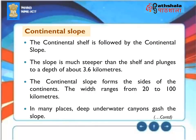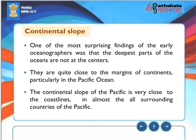Continental Slope: The continental shelf is followed by the continental slope, which is much steeper and plunges to a depth of about 3.6 kilometers, forming the sides of the continents. Its width ranges from 20 to 100 kilometers. In many places, deep underwater canyons gash the slope. One of the most surprising findings of early oceanographers was that the deepest parts of the oceans are not at the centers, but quite close to the margins of continents — particularly in the Pacific Ocean, where the continental slope is very close to the coastlines of surrounding countries.